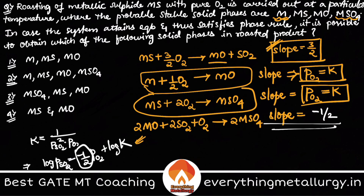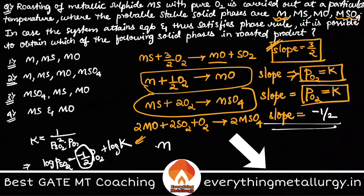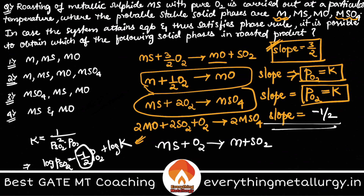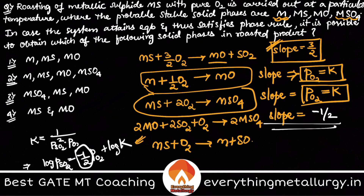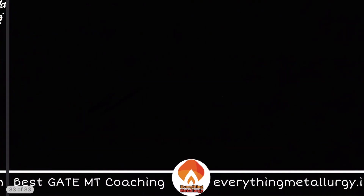So the slope for the MO to MSO₄ reaction is −1/2. There is also one more reaction: MS + O₂ → M + SO₂, and the slope of this line is equal to 1. So in total we have five different reactions, giving us lines with slopes: 3/2, vertical (two lines), −1/2, and 1.